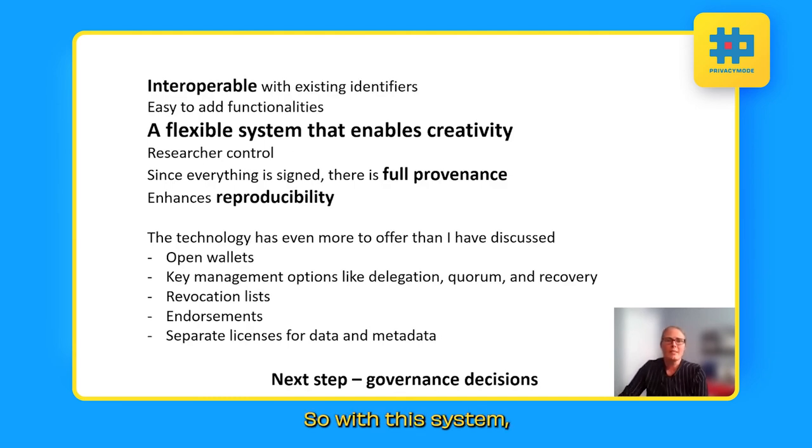So with this system, we have interoperability with existing systems of identifiers. So it's very easy to add new functionalities. It means that we can create a flexible system that enables creativity. We can have researchers controlling different aspects of the ecosystem that they are able to build. And since everything is signed, there's going to be full provenance. And this should ultimately handle enhanced reproducibility in science. And in my little examples here, there's a lot more of the technology that there is than what I have discussed.